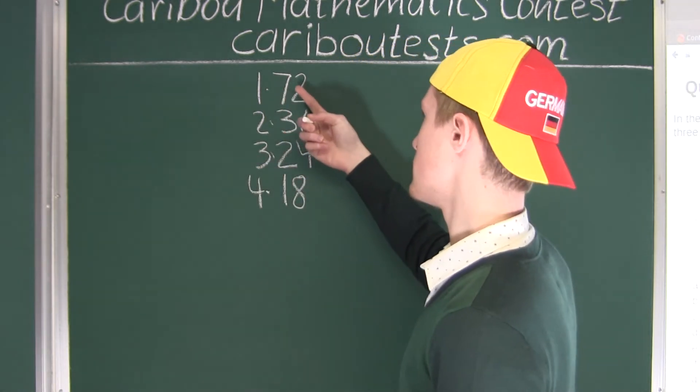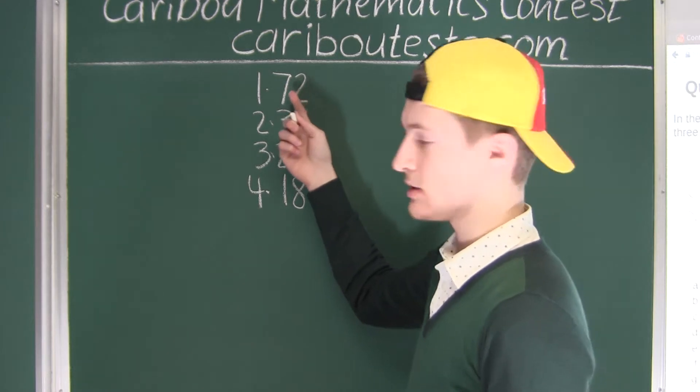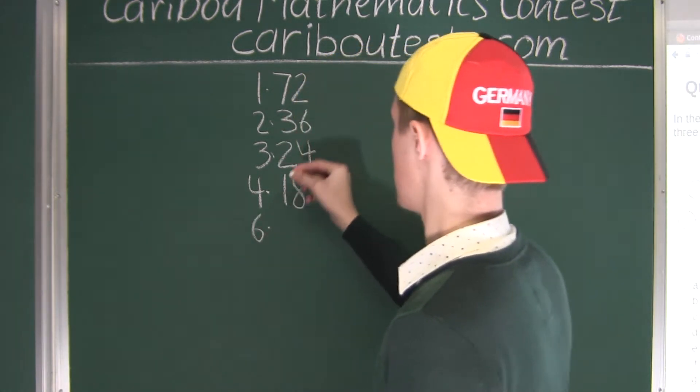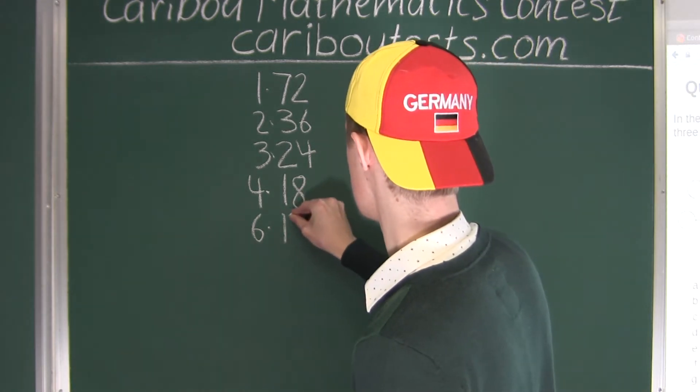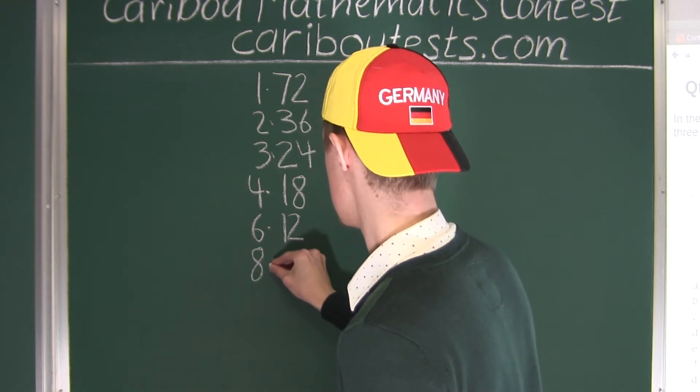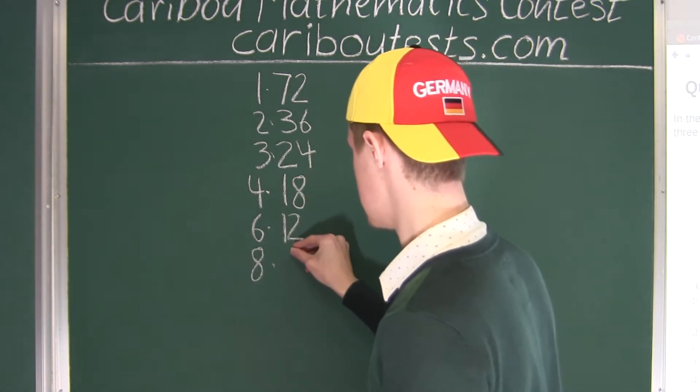Now for 5, well 72 doesn't end in a 0 or 5, so it can't be 5. Then 6 multiplied by 12. 7, no that wouldn't work, and then finally 8. Yes, 72 divided by 8 is 9.